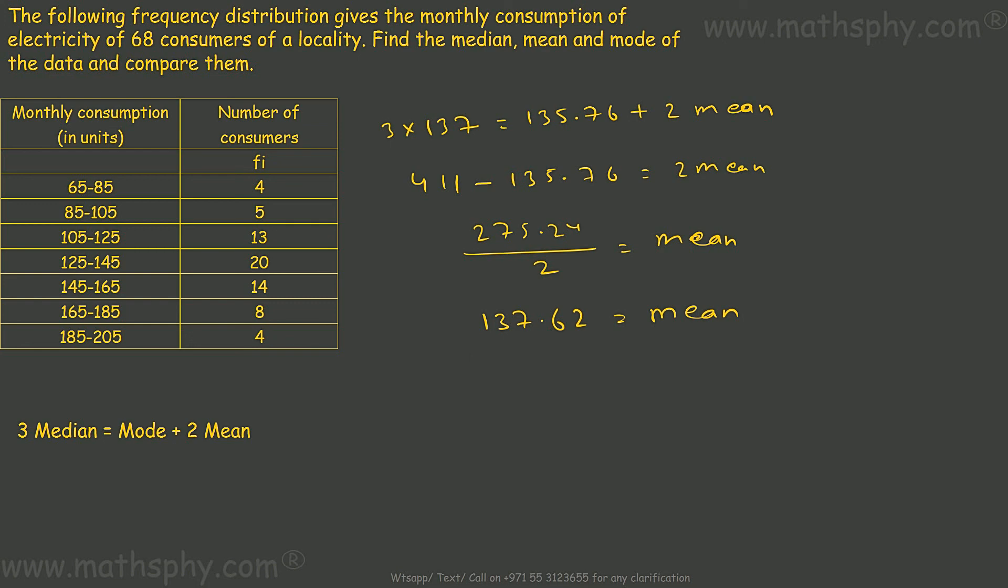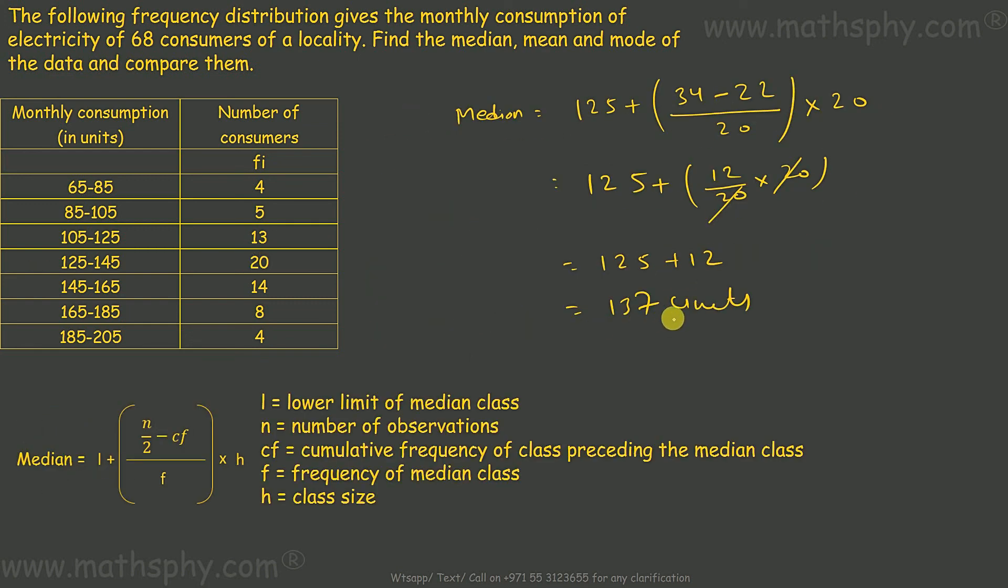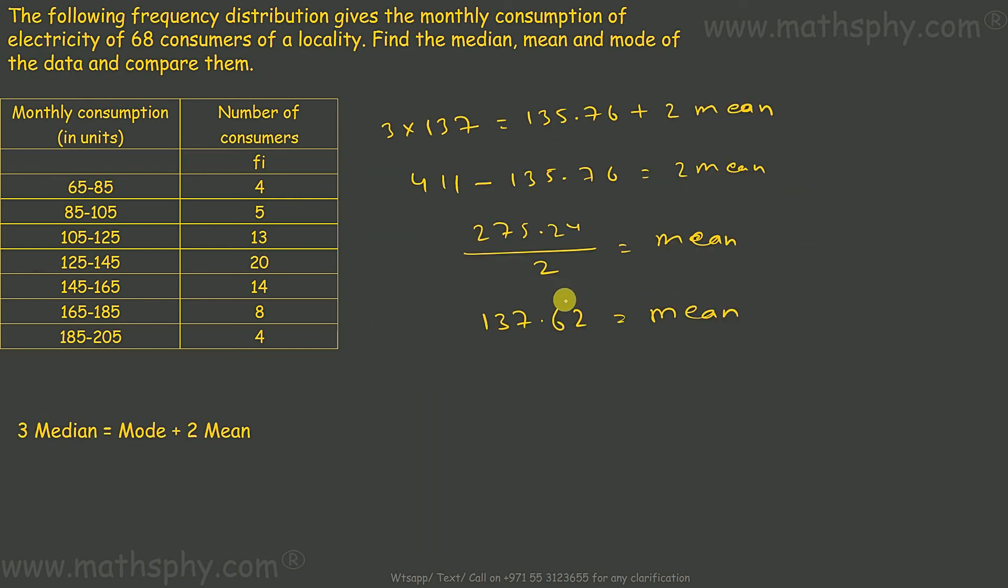This gives me 137.62 equals mean. So mean is 137.62, mode is 135.76, and median is 137. It means median, mode and mean all three are approximately the same here.